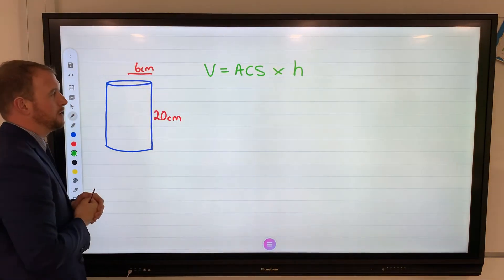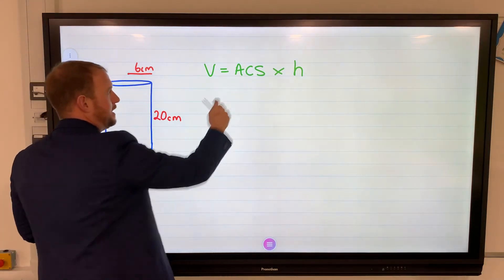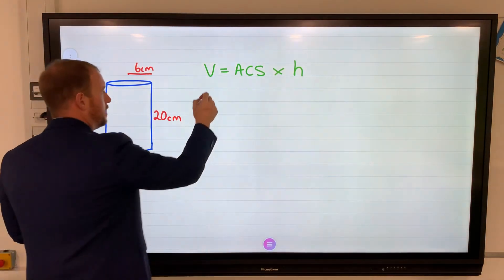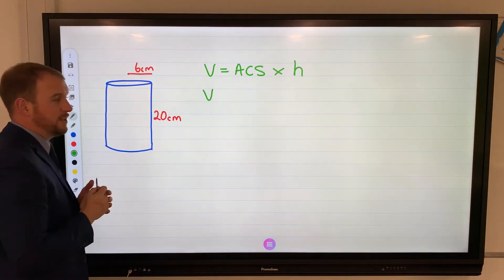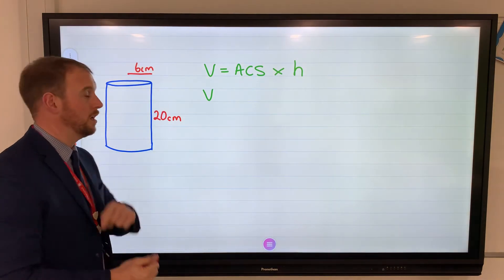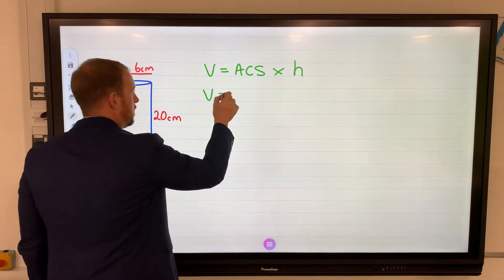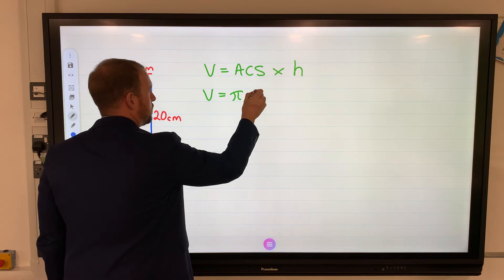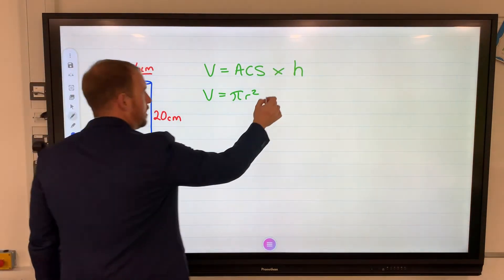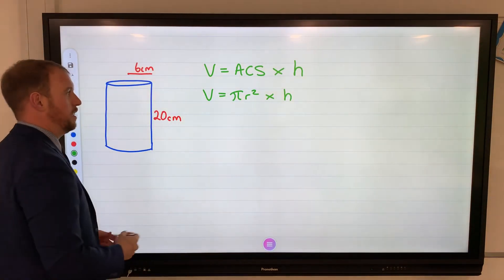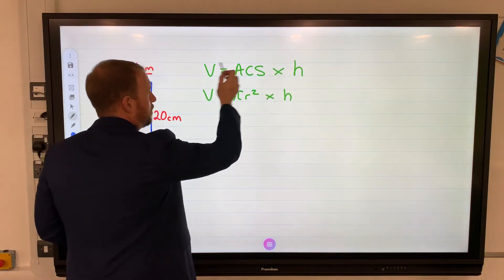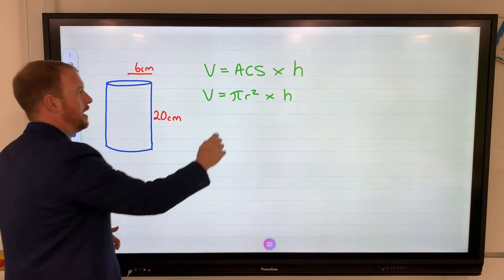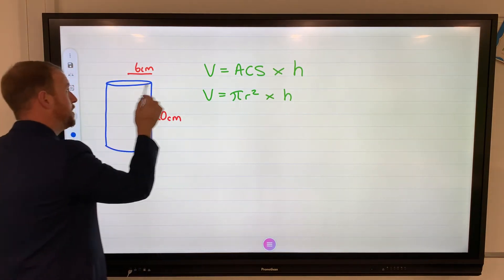So ACS, area of cross section. Cross section of a cylinder is a circle. Area of a circle: pi r squared times that then by the height.